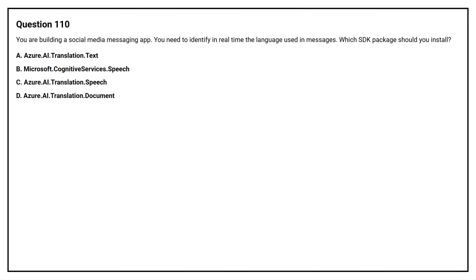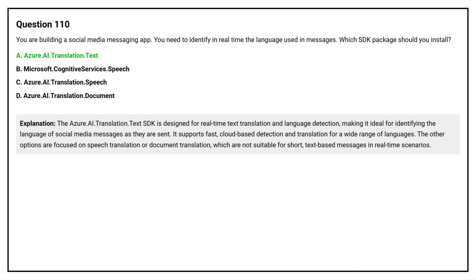The correct answer is Option A: Azure.ai.translation.text. The Azure.ai.translation.text SDK is designed for real-time text translation and language detection, making it ideal for identifying the language of social media messages as they are sent. It supports fast, cloud-based detection and translation for a wide range of languages. The other options are focused on speech translation or document translation, which are not suitable for short text-based messages in real-time scenarios.